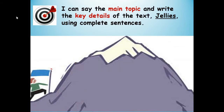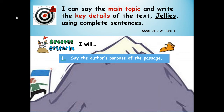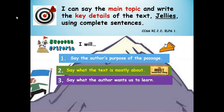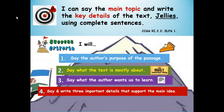Here's our learning target: I can say the main topic and write three key details of the text Jellies using complete sentences. Success criteria — how will you know you're successful? Here are steps to success, and we're going to do these steps together one at a time. Number one: say the author's purpose of the passage. Number two: say what the text is mostly about. Number three: say what the author wants us to learn. Number four: say and write three important details that support the main idea in complete sentences.